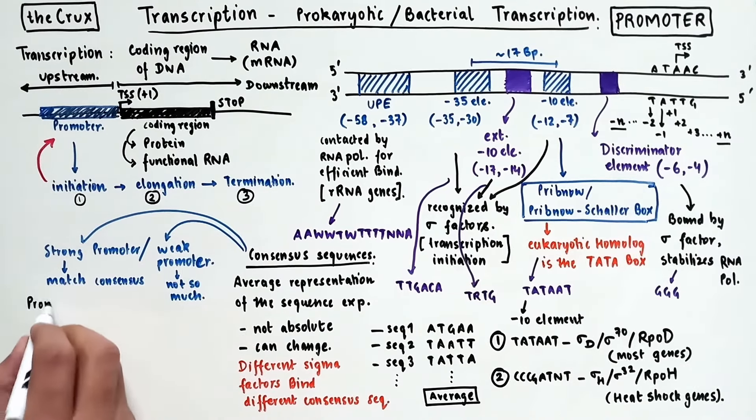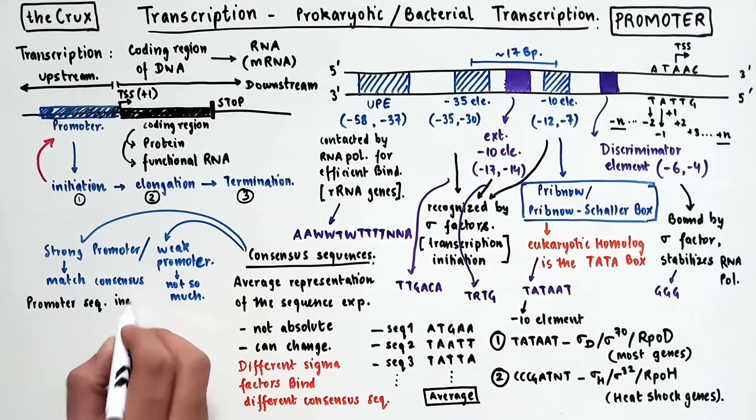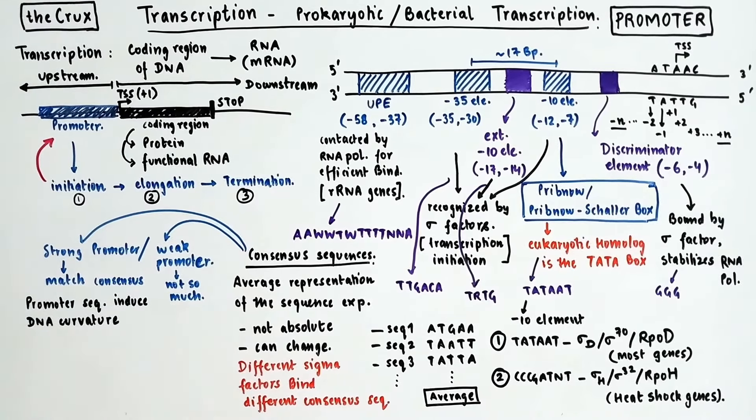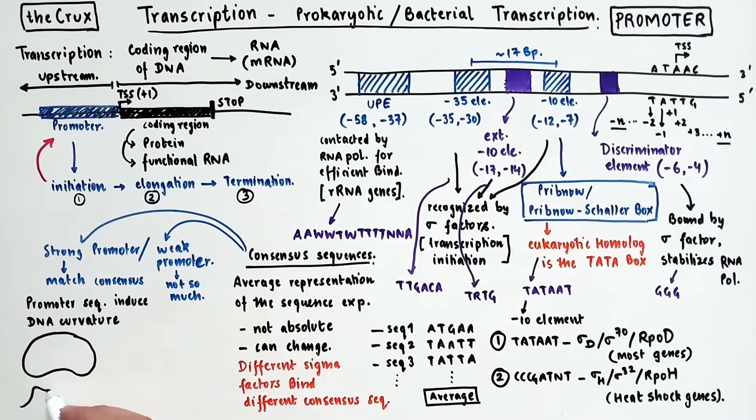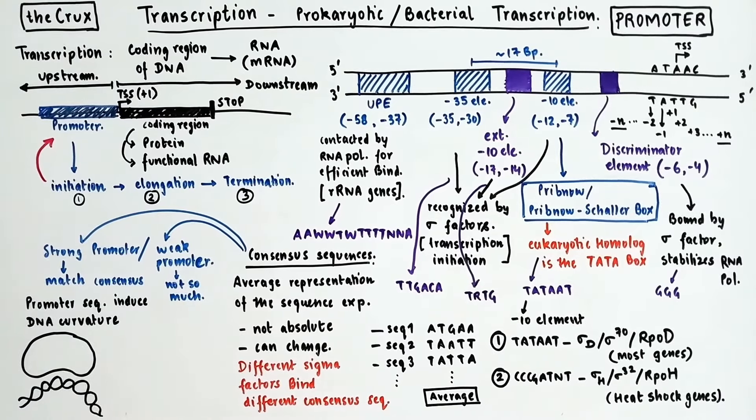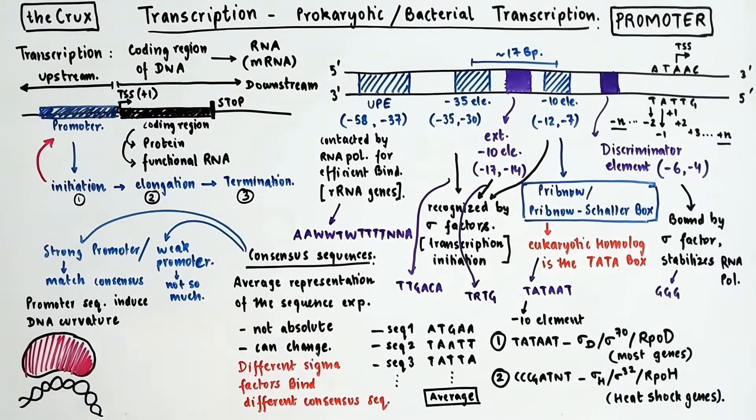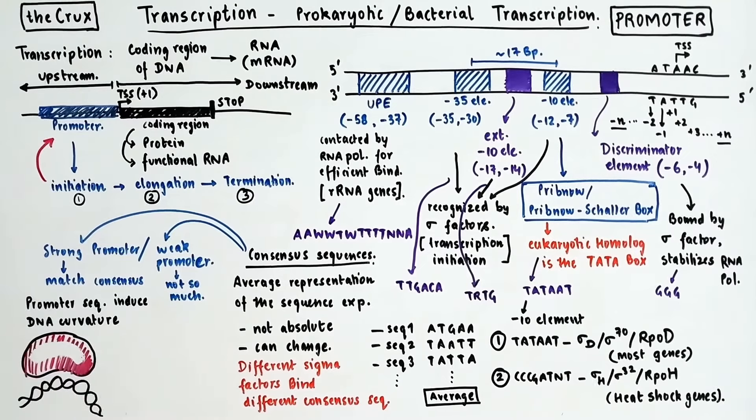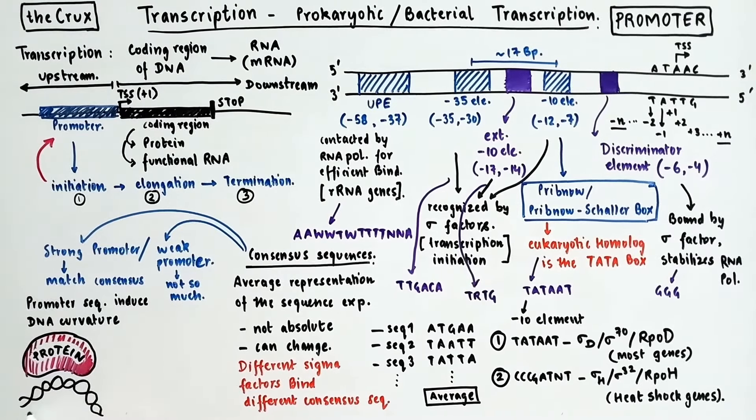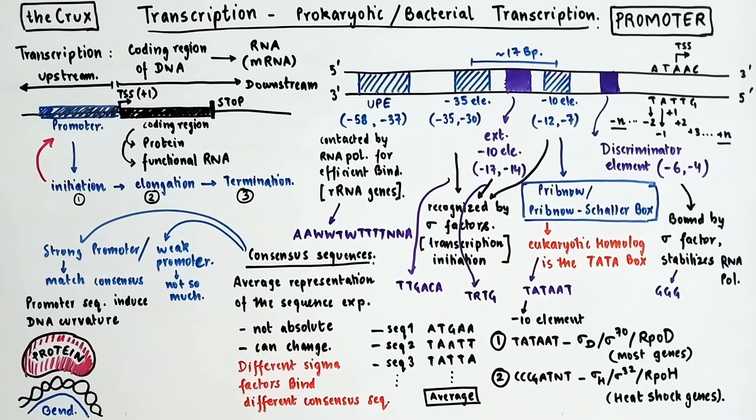One last thing about promoters you should know is that their sequence composition can cause DNA to form curvatures or bends. This is important because the proteins like sigma factors that bind them have to unfold these DNA sequence. And torsion, or bend, created by these sequence helps these proteins effectively do their job.